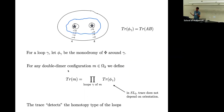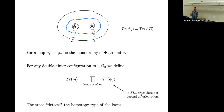If I've got a bunch of loops, I can take the product over all loops of the traces of the monodromes around those loops. The nice thing about SL2, as opposed to SL3, is that the trace does not depend on the orientation. Whether I go clockwise or counterclockwise, for SL2 the trace of the matrix and the trace of the inverse matrix are the same. The magic result, essentially due to Fock and Goncharov, is that the trace of an SL2 connection can be used to detect the homotopy type of the loops.